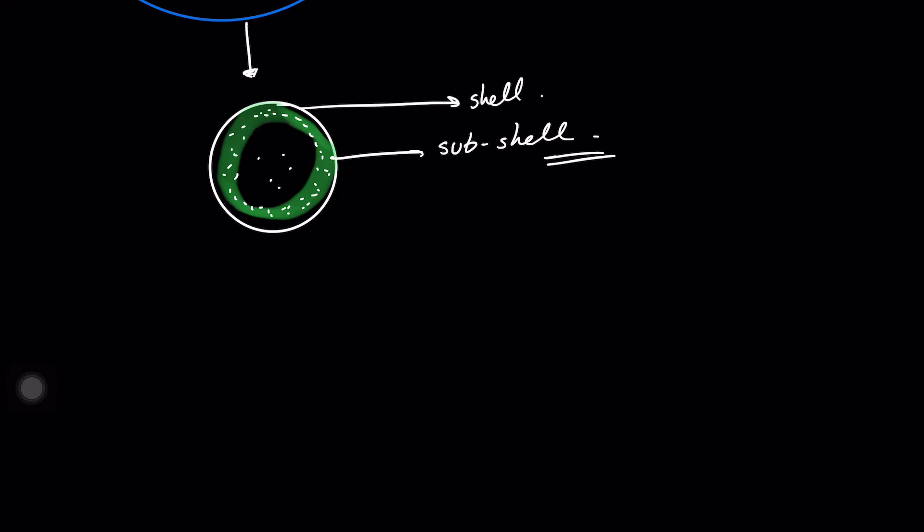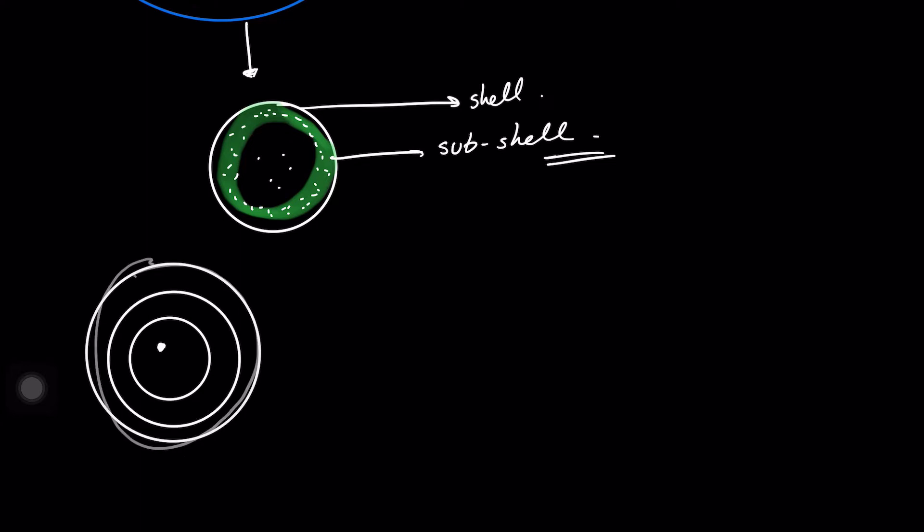What scientists discovered is that as the shell number increases, the number of regions increases as well. Why? Because higher shell numbers tend to hold more electrons, meaning the electrons need more spaces or subshells to reside in. So more positions — more subshells — were discovered as shell number increases.